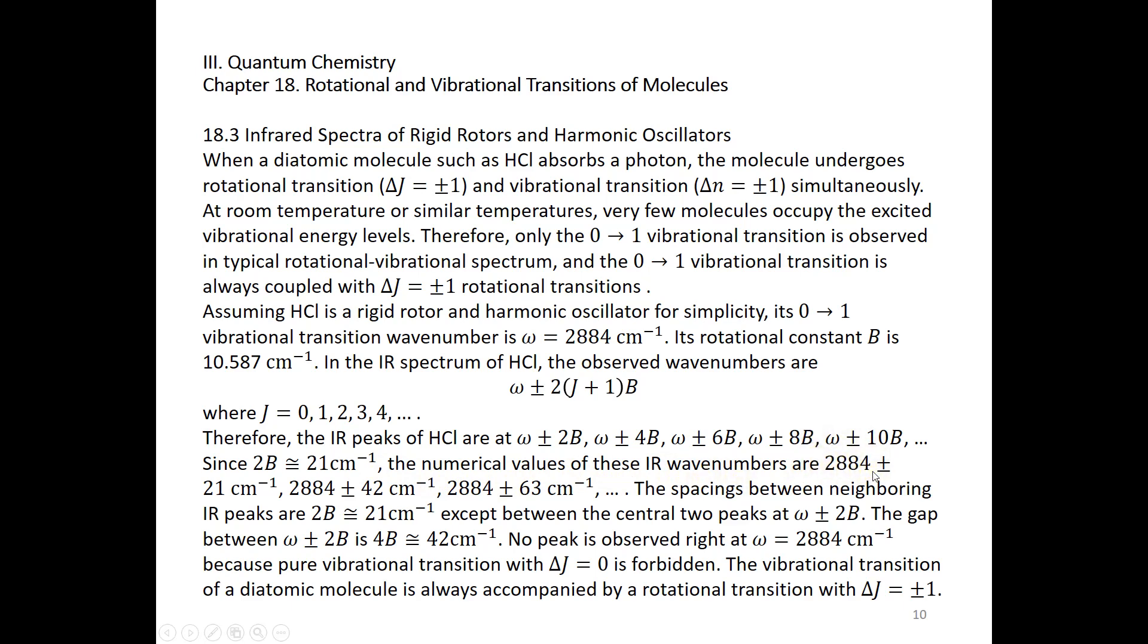Plus or minus 42, plus or minus 63, etc. The spaces between the neighboring infrared peaks are 2B, which is approximately 21 wave numbers or 21 per centimeter, except between the central two peaks at omega plus 2B and omega minus 2B.